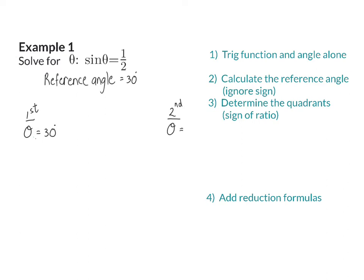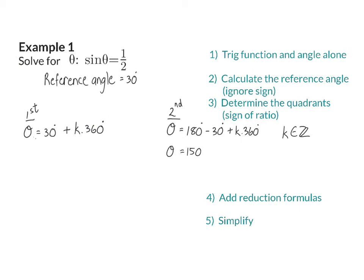In the second quadrant we use the reduction formula 180 degrees minus our reference angle of 30 degrees. We can get more possible answers by adding a full 360 degrees as many times as we like, so we indicate that we can add any number of 360 degrees — represented by k — to both quadrant equations. K must be an integer. Simplifying the second quadrant gives theta equals 150 degrees plus any number of 360 degrees.